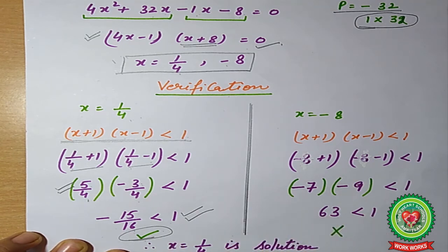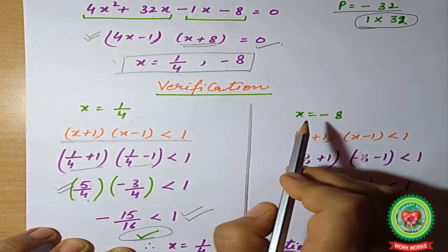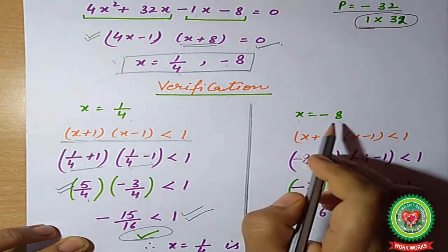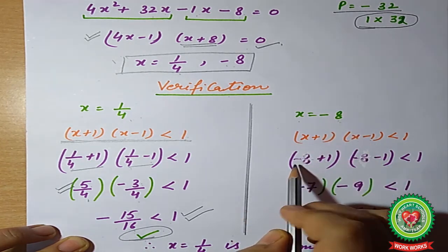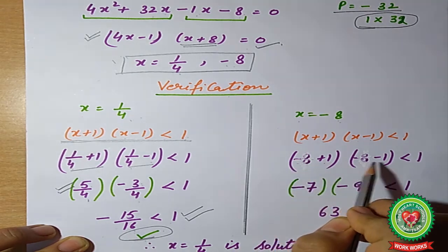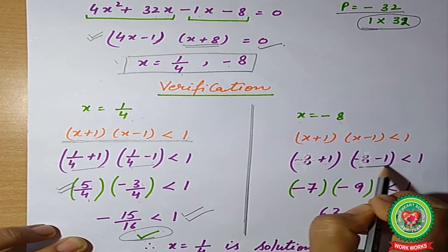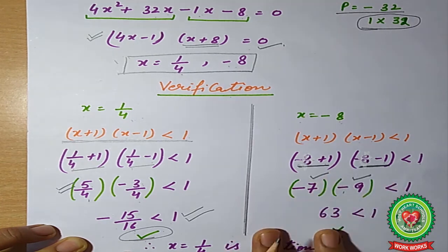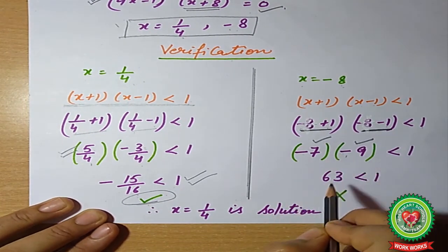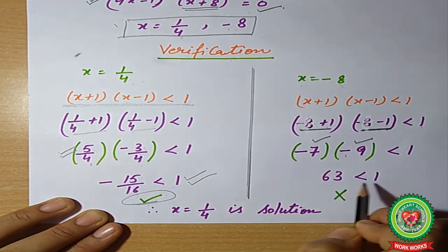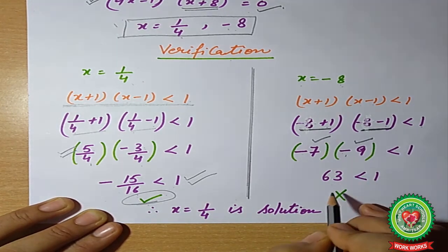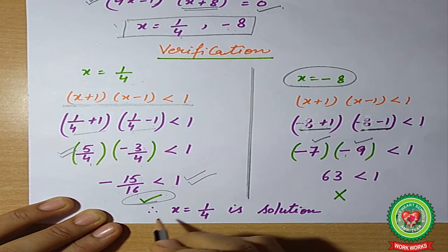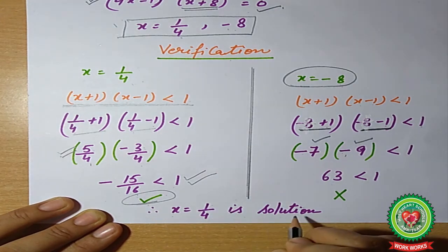Now checking the other solution x = −8: (−8+1)(−8−1) = (−7)(−9) = 63. Since 63 is not less than 1, this solution does not satisfy the condition for the formula. Therefore x = −8 is rejected, and x = 1/4 is the required solution.